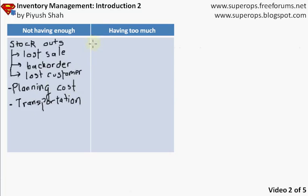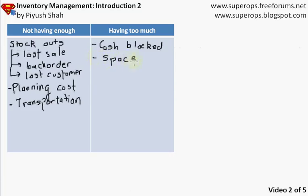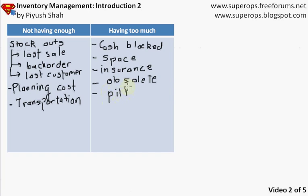Having too much inventory brings a huge chunk of cost. Because we have too much, we have cash blocked. If I did not hold the inventory, I could use that money somewhere else — park it in a bank and earn interest, or invest in another form of business. I also have the cost of space, since I need somewhere to park the inventory. I will spend more on insurance because I have more material to cover. My goods could get obsolete and I may not be able to sell them off. I could also have pilferage — because I have too much, people may steal my goods.